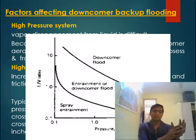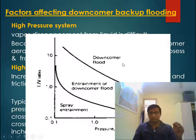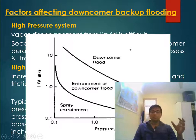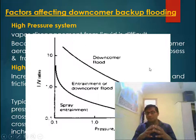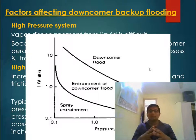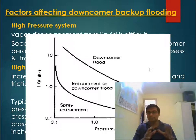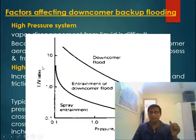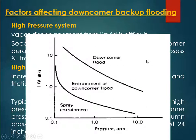A diagram taken from Henry and Kister's book summarizes all these factors. This diagram is for general guidelines only, since flooding depends on tray geometry and downcomer entrance geometry as well. At high liquid flow rate and high pressure, flooding is usually due to downcomer flooding. At low pressure and low L/V ratio — where vapor volumetric flow rate is high and liquid flow rate is low — flooding is typically spray entrainment flooding.